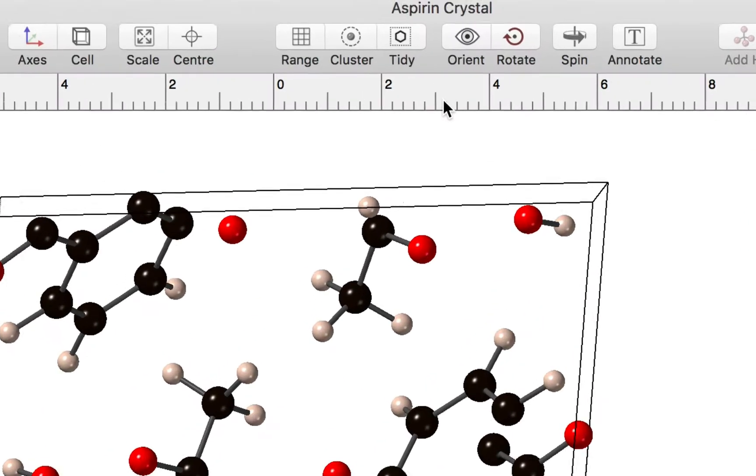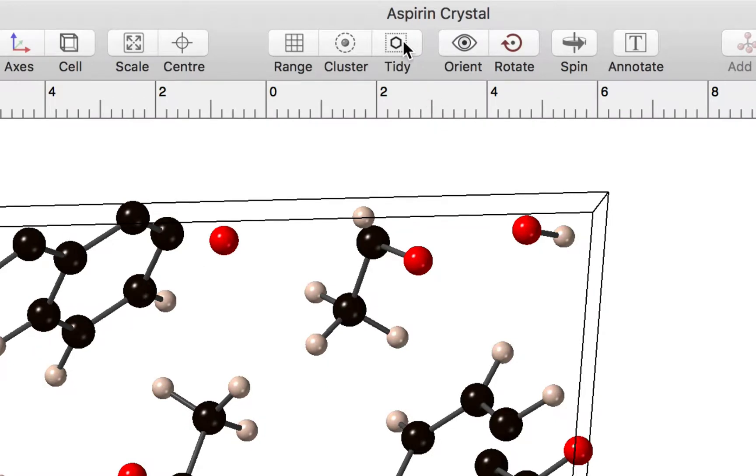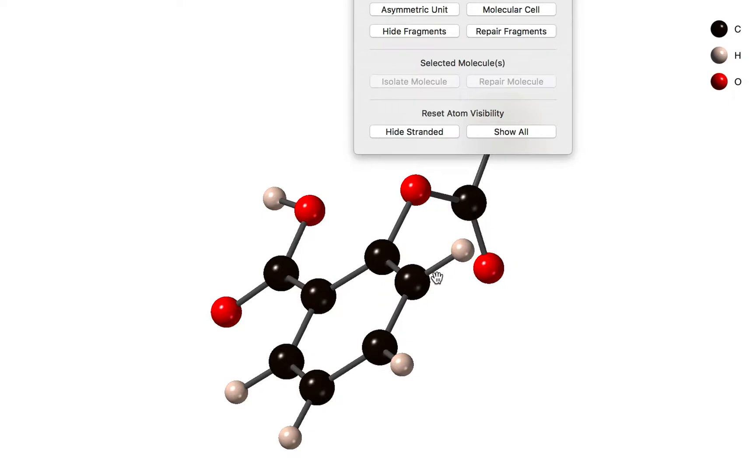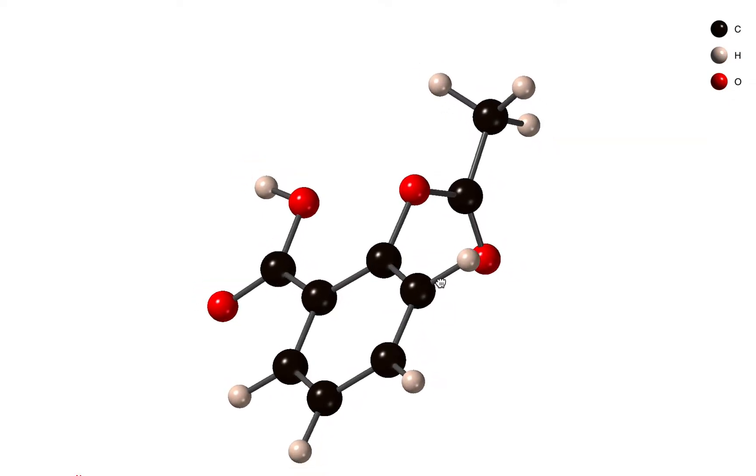If we move to the Windows toolbar, you'll notice there is a tidy button. Clicking that displays a popover with some handy commands. The first thing you might want to do is click on asymmetric unit, and for this structure the asymmetric unit consists of a single molecule.